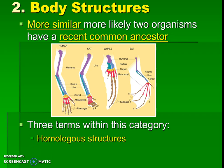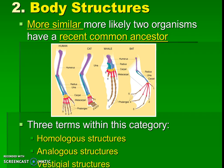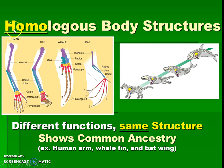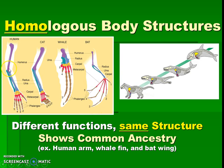Because body structures is such a broad category, we have a couple of major vocab terms. Those are: homologous structures, analogous structures, and vestigial structures. Homologous structures have the prefix 'homo,' which means same. These are structures that have different jobs or functions but are actually the same structure internally. So even though a human hand, cat leg, whale flipper, and bat wing are all used for different things — whether flying, walking, or grabbing — they all have the same internal structure, and that shows common ancestry.